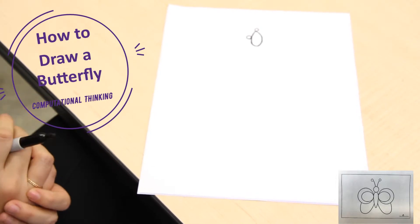And now you can do the same thing on the other side. Okay. Now take that oval shape and shade it in.